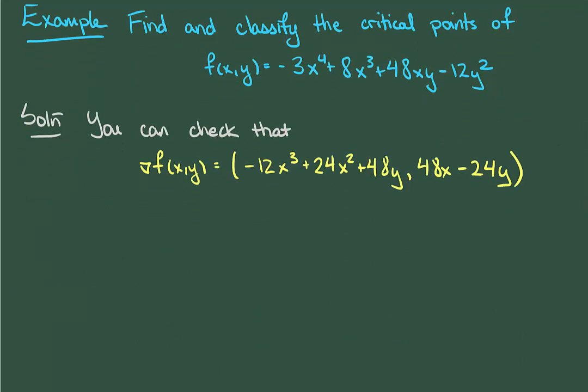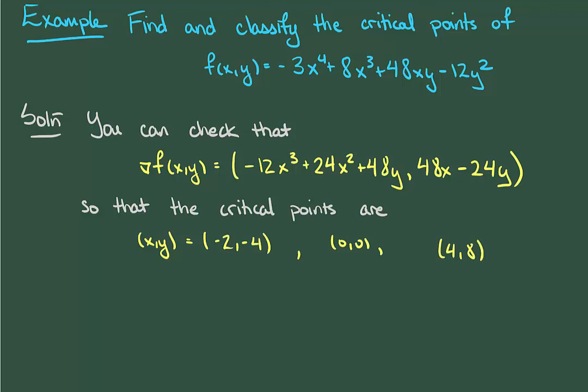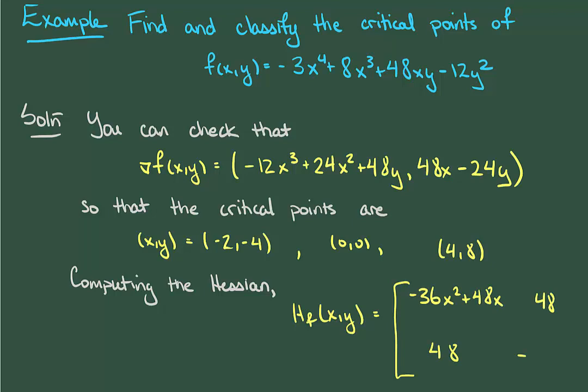The critical points are where the gradient is equal to zero, so I'll let you check for yourself that if we do that we get the following three pairs of points. Next, we compute the Hessian for general x and y, where it turns out not to depend on y, and that three of the four terms are actually constants.